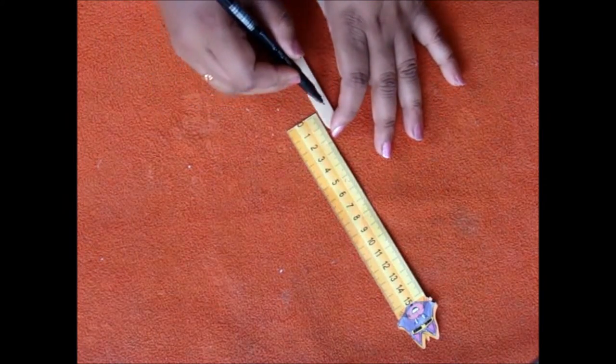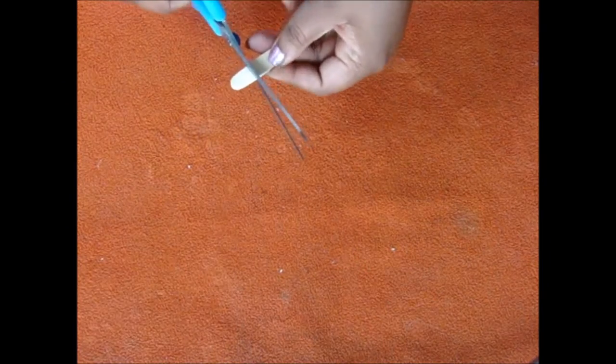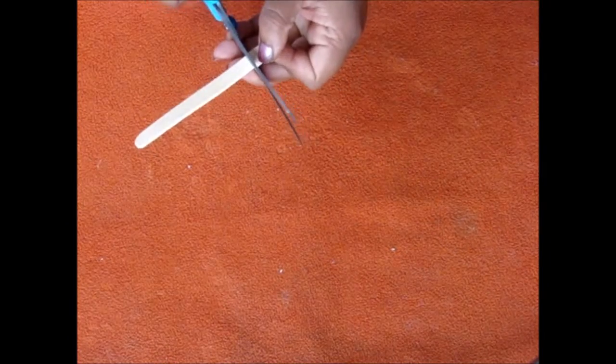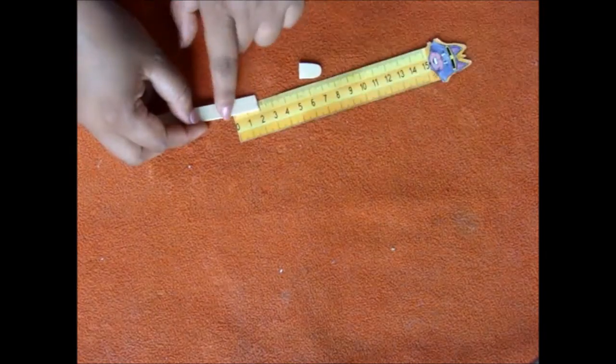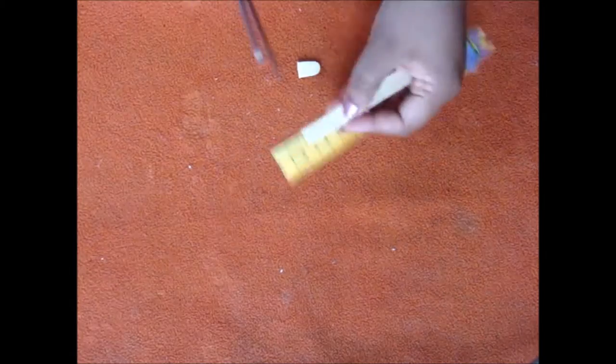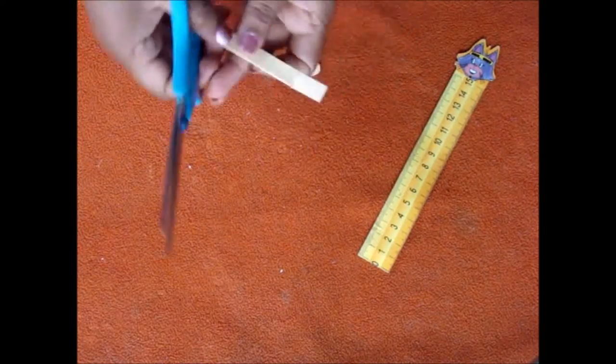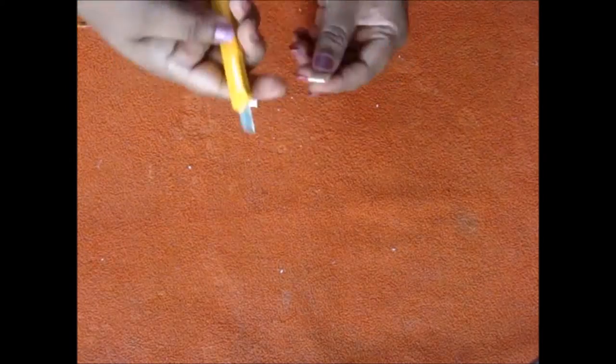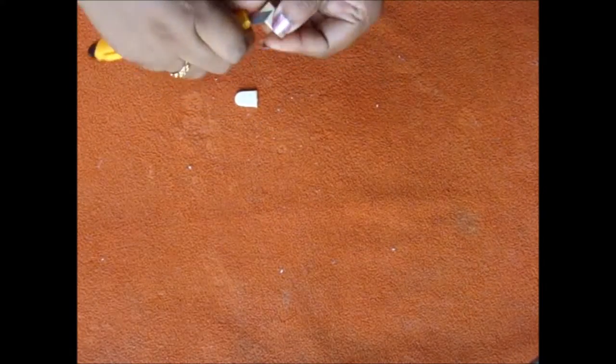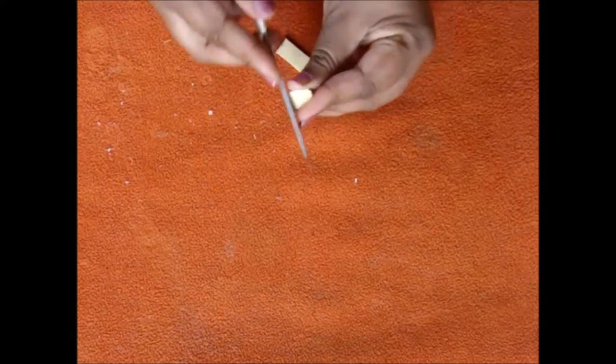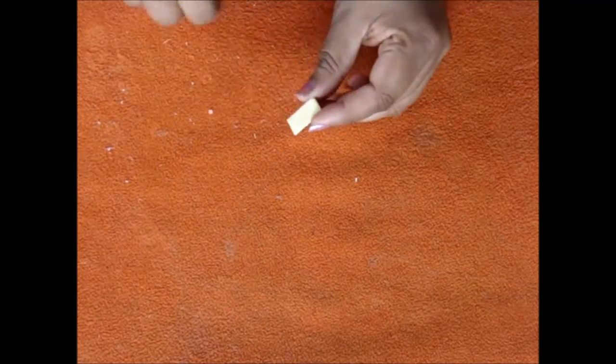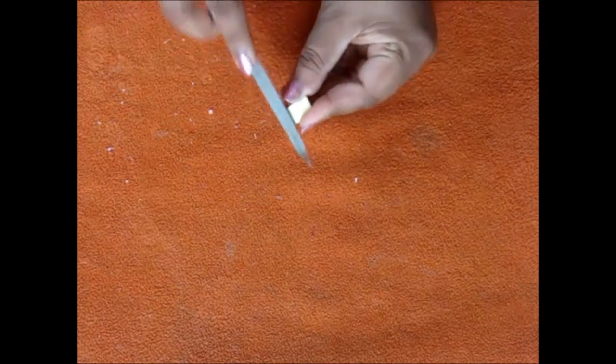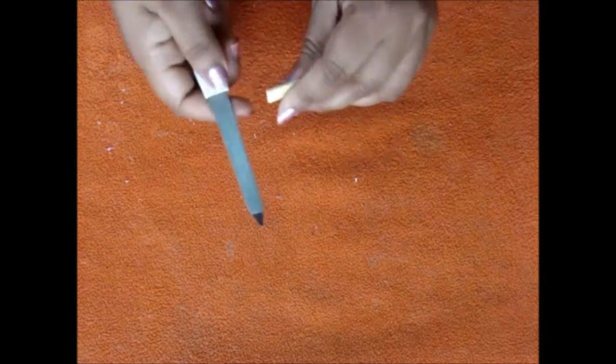Take a popsicle stick and make a mark at 1.5 centimeters for the top on the curved edge and for the bottom. Make around two or two quarter and cut it. With the help of filer or a cutter, smoothen the edges in a slanting way.